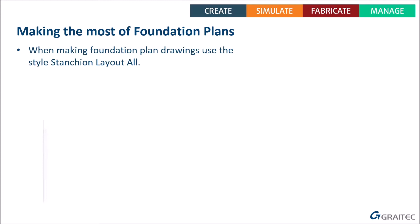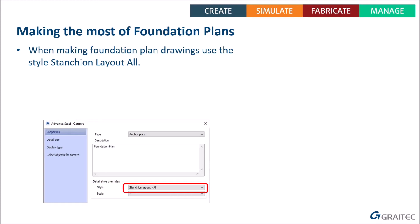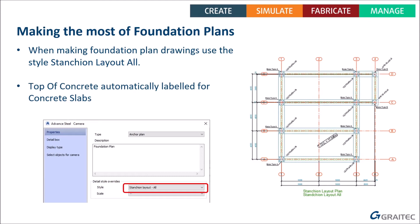The first topic is making the most of your foundation plans. When you do your foundation drawing — your overall plan marking out where beams go — we recommend you use the style 'Stanchion Layout All'. That's the one in the UK build designed for the overall foundation plan. It dimensions the grid, shows the base plates, columns, and concrete. If you have a concrete slab, it will automatically label the top of concrete using the elevation set in your model. If you have level symbols in the model and you've changed your global datum, the top-of-concrete label will respect that.